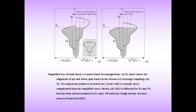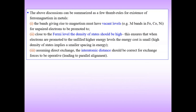Two important points to note: first, the band structure is actually more complicated than the simplified picture shown. Second, the density of states n(E) is different for Fe and Ni, but has been assumed the same here for simplicity. The 3d band has a high density of states close to the Fermi level.